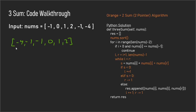Now we enter the two-sum portion where we fix negative four and set left and right pointers to negative one and two. In the while loop we check if nums[i] + nums[l] + nums[r] equals zero. Negative four plus negative one plus two equals negative three — not zero — so we shift the left pointer inward and keep recalculating. The sums become negative three, negative two, negative one, and we reach the end of the while loop, confirming it's impossible to get zero with negative four fixed.